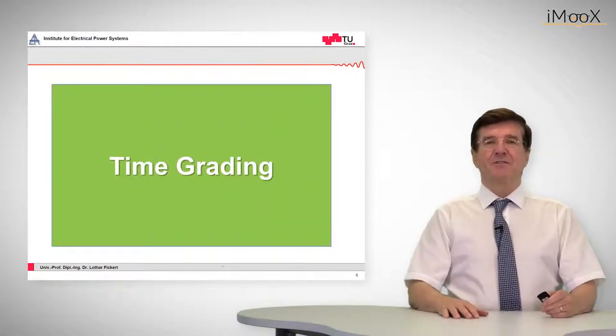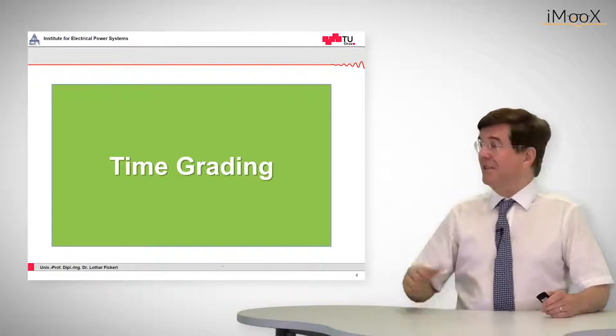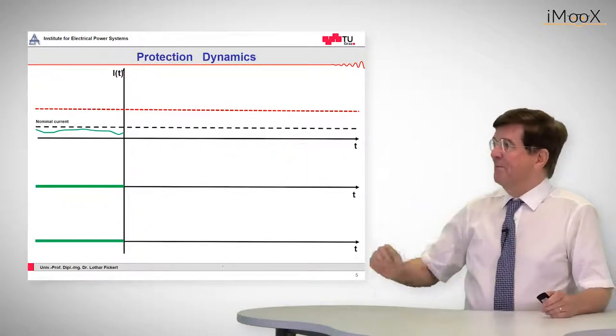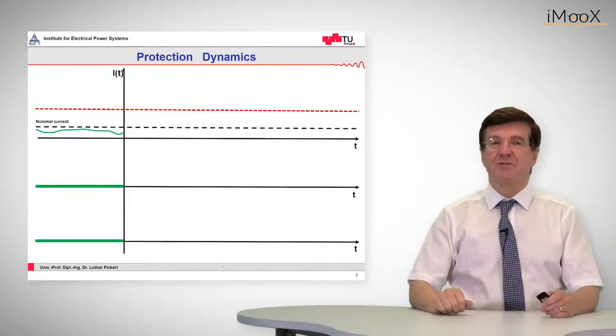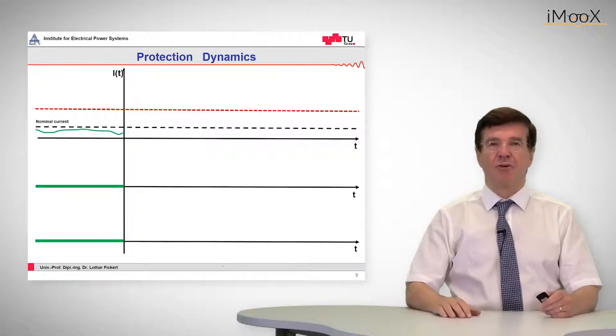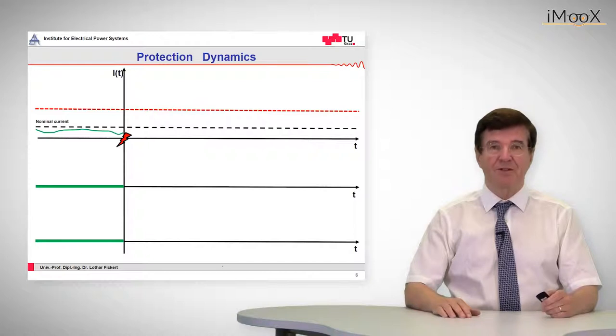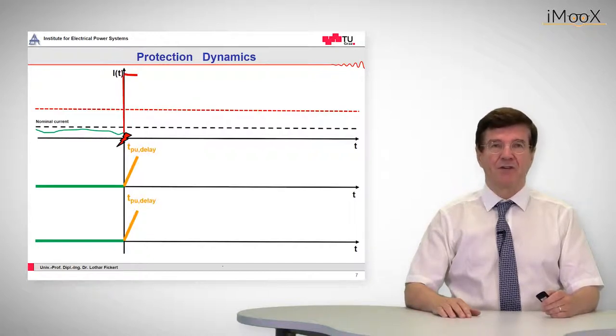So let's start first with the time grading. As you can see here, a typical system fault starts with a regime of normal current. Then we have a short circuit and from that moment on we have heavy current flowing and the protection relays will pick up.